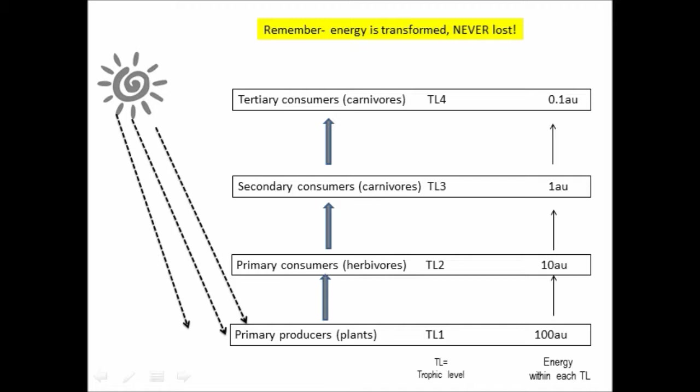That trophic level 3 will produce inedible material, material that can't be reached or got hold of. And also, of course, respiration makes a huge difference. So the third, the TL4, trophic level 4, the third level consumers, are only going to receive 0.1 arbitrary units.